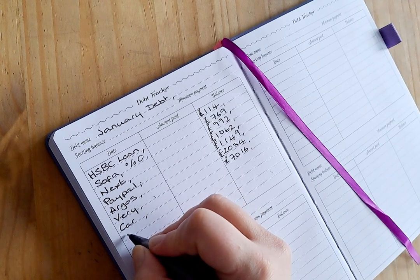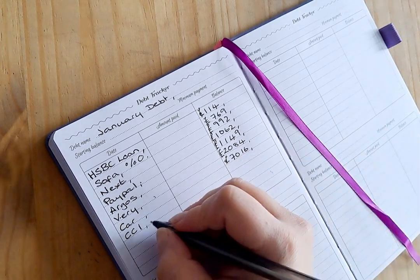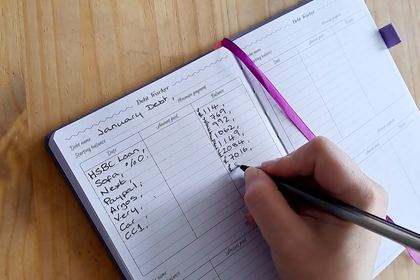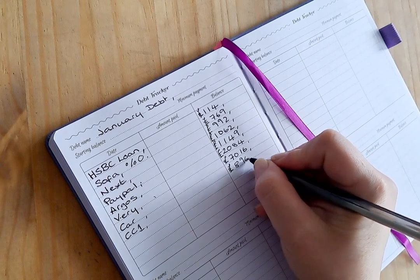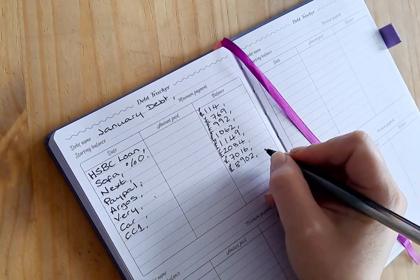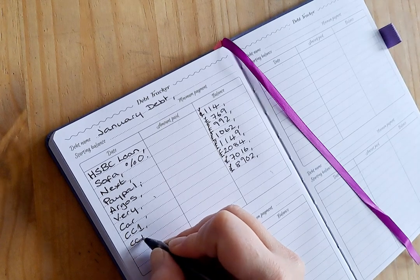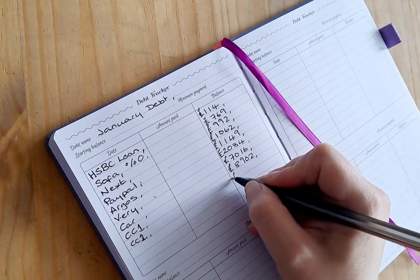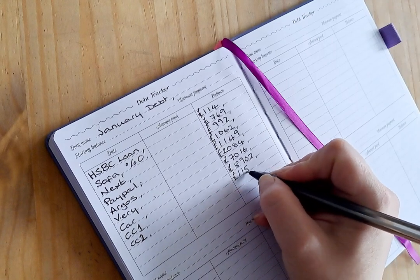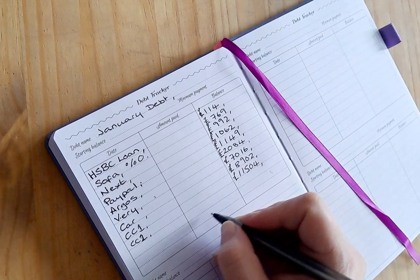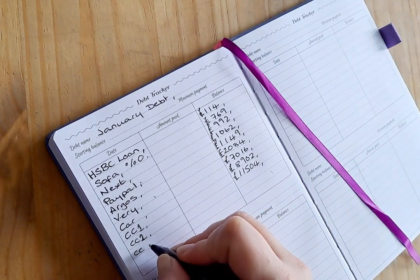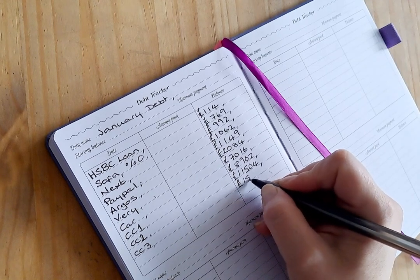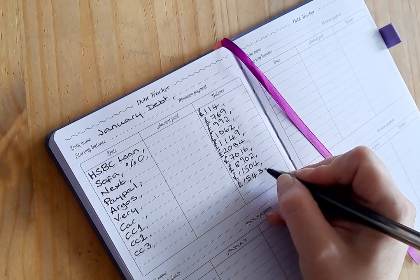Then we have our credit cards. So credit card one has a balance of £8,902, credit card two has a balance of £11,504, and credit card three has a balance of £15,438.